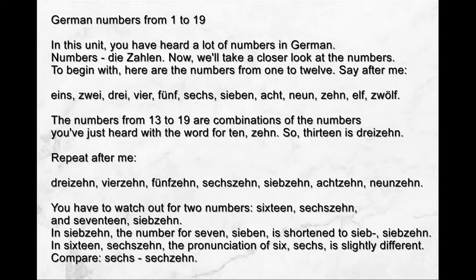The numbers from 13 to 19 are combinations of the numbers you've just heard with the word for 10. So 13 is 'dreizehn'. Repeat after me: dreizehn, vierzehn, fünfzehn, sechzehn, siebzehn, achtzehn, neunzehn. You have to watch out for two numbers: 16 — 'sechzehn' — and 17 — 'siebzehn'. In 'siebzehn', the number for 7, 'sieben', is shortened to 'sieb-'. In 'sechzehn', the pronunciation of 6, 'sechs', is slightly different.